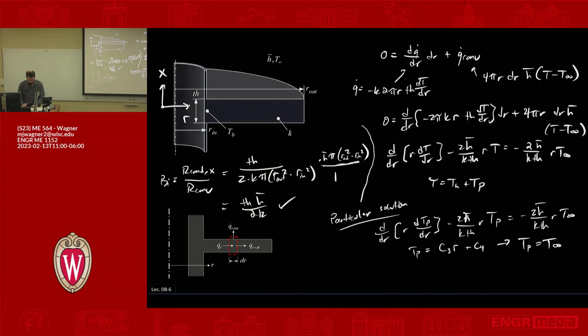So then the last part we'll try to squeeze in here at the bottom is the homogeneous solution. The homogeneous solution is d/dr times r d(Th)/dr minus 2h̄/(k·thickness)·r·Th equals zero.